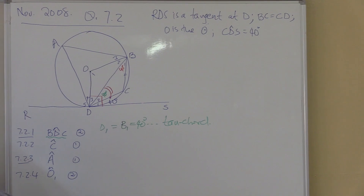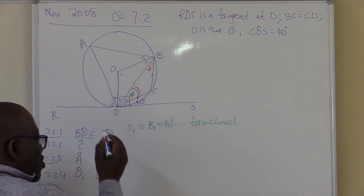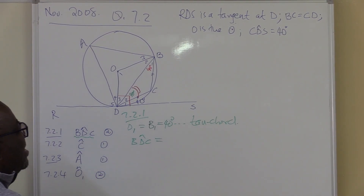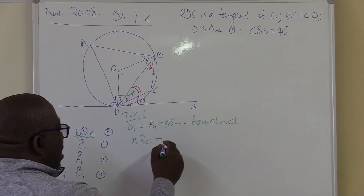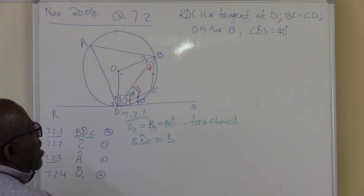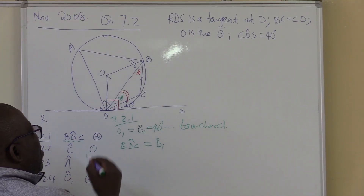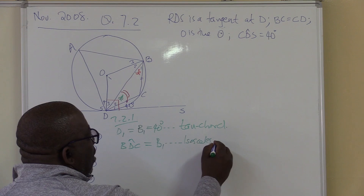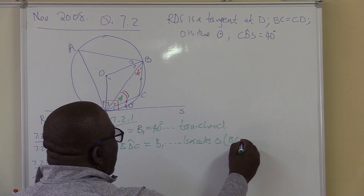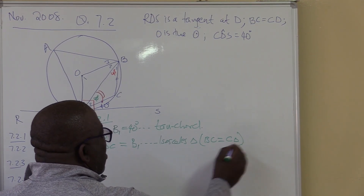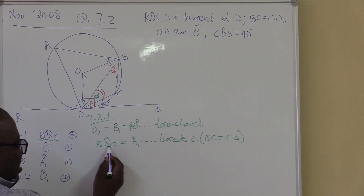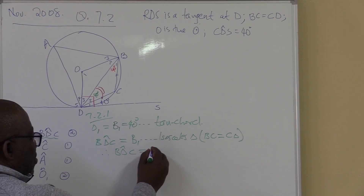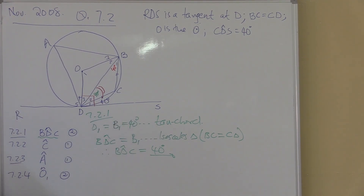Then we find angle BDC. Angle BDC is the same as angle B1 — why? Because we've got an isosceles triangle. We are given that BC equals CD, so we've got an isosceles triangle. BDC equals B1, and B1 equals 40, therefore BDC equals 40 degrees. This angle is 40 degrees — the one we're looking for. It's very easy. Just apply theorems exactly as you see them.